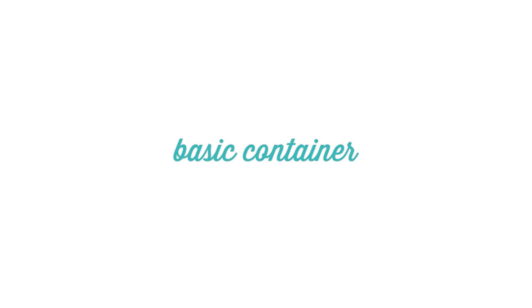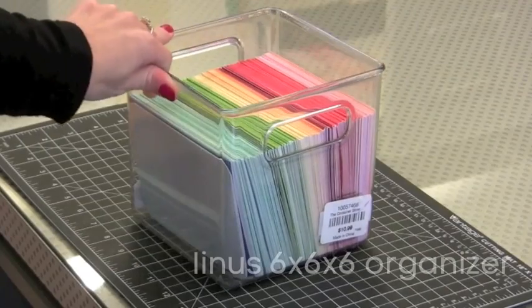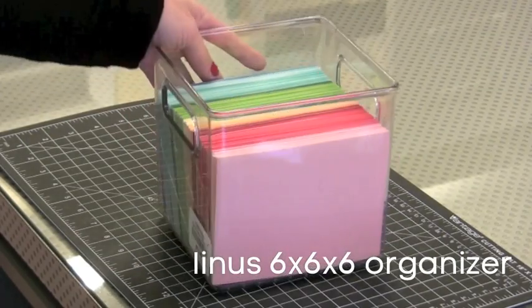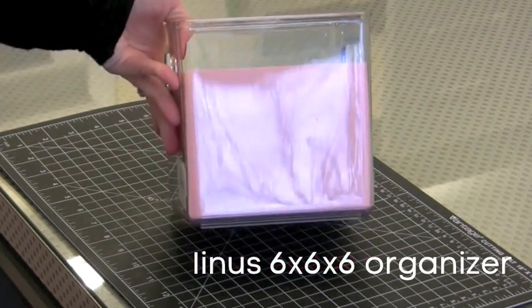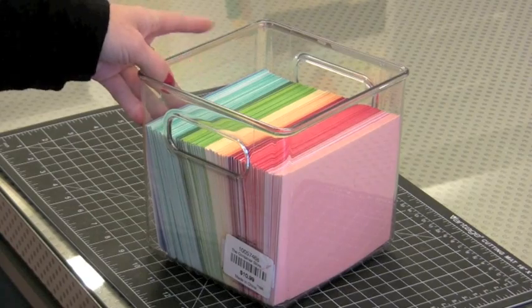Now I just wanted to show you a few more containers. This is just a basic container that I found is really handy to have. It's just the right size to hold a lot of different things. It's a Linus 6x6x6 organizer. I still have the labels on mine. I keep these in drawers. You'll see here they're the perfect width to hold some note cards.